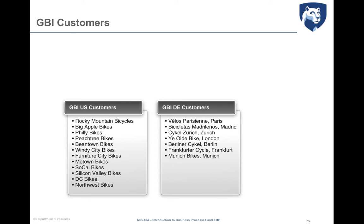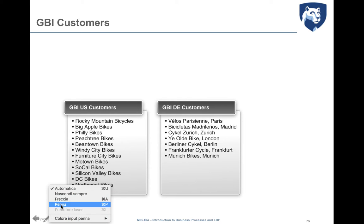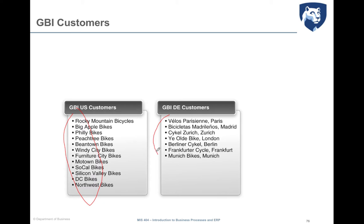In our case, JBI US has 12 customers and JBI Germany has 7 customers. In the fulfillment process, customers can play different roles — what we call partner functions.